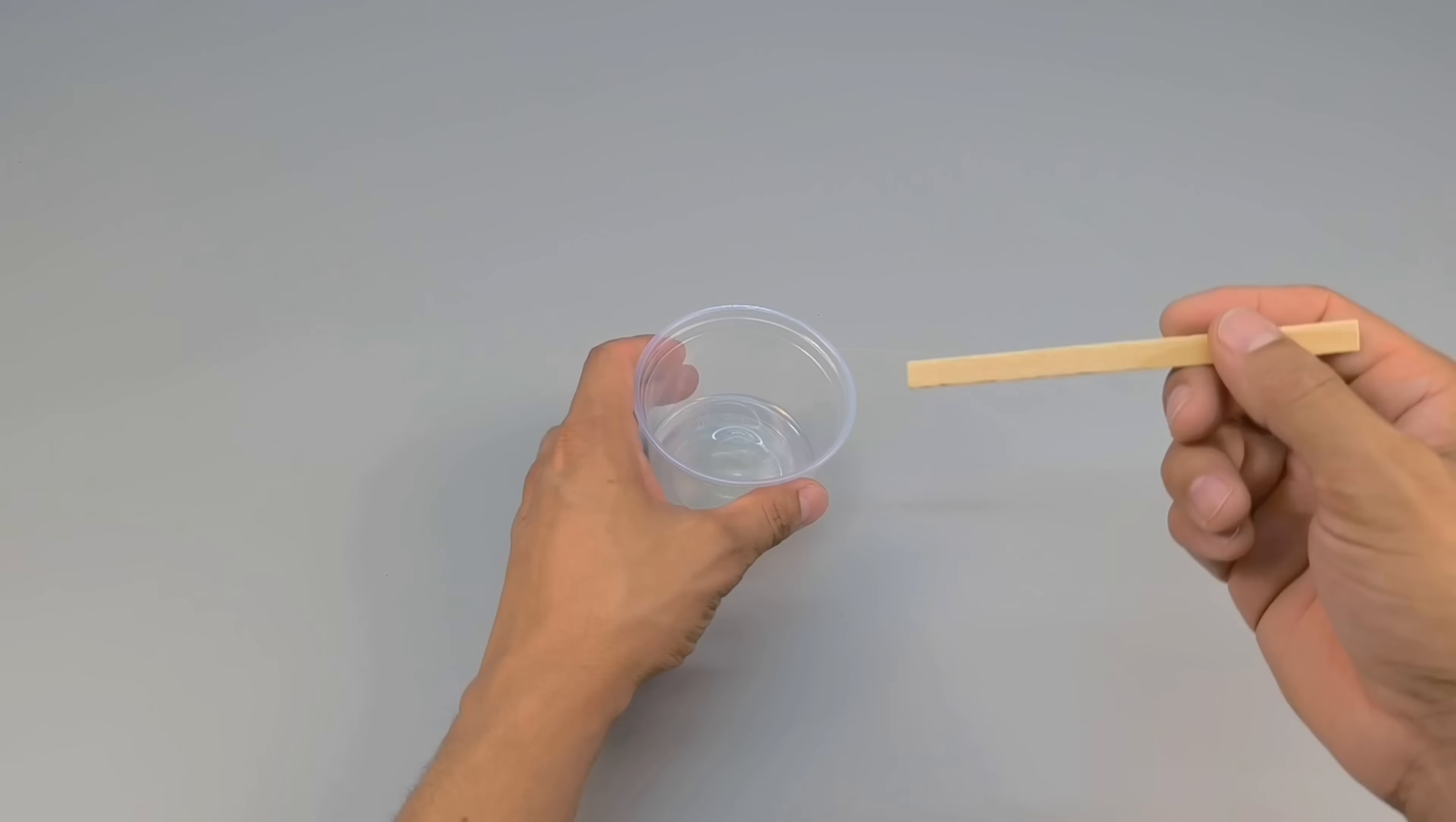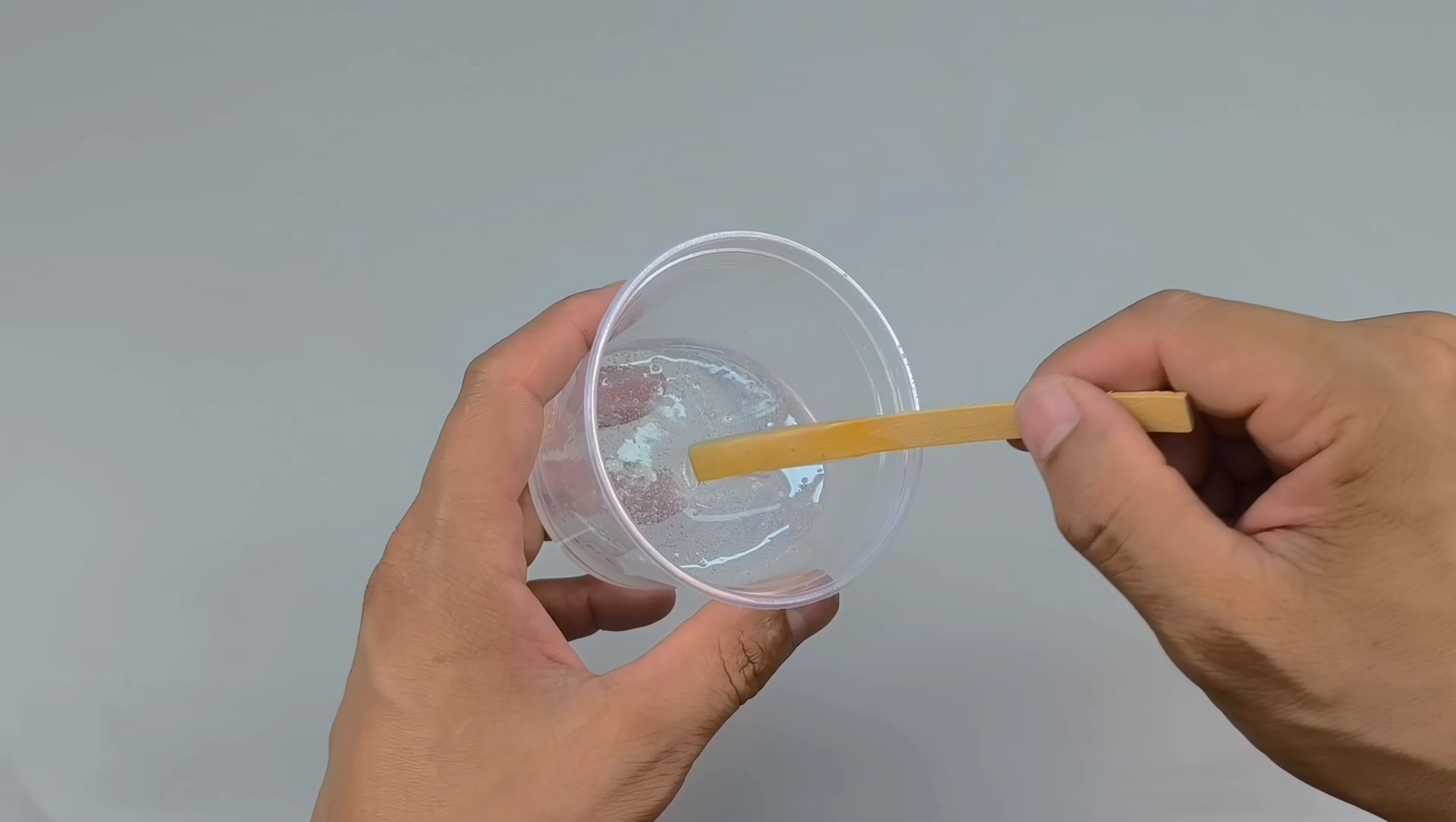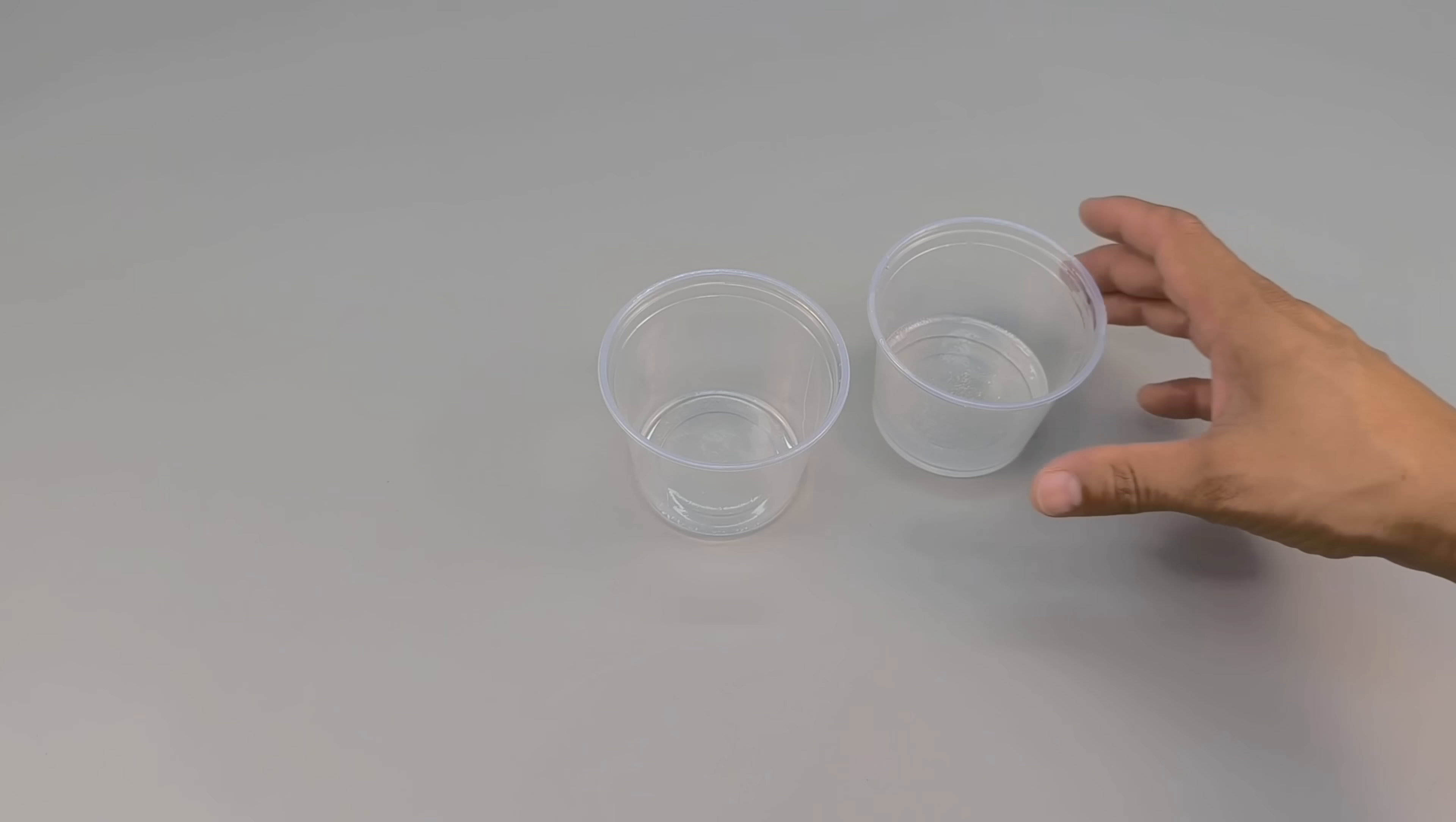After mixing the liquid silicone glue with the ethanol, simply stir continuously until the glue dissolves completely. Gradually, the liquid will become thinner and more homogeneous, with a light and uniform texture, ready to receive the metallic pigment.